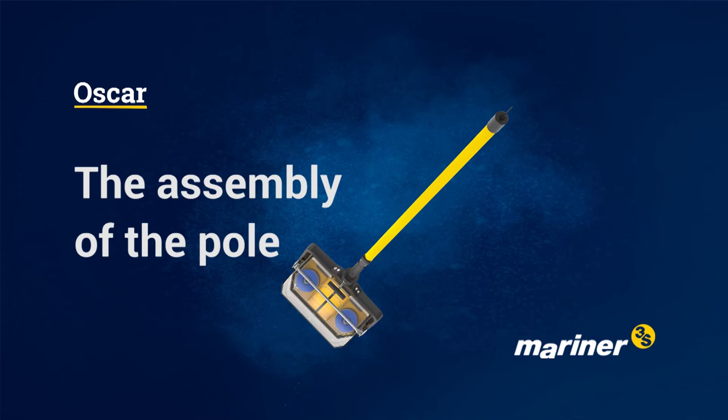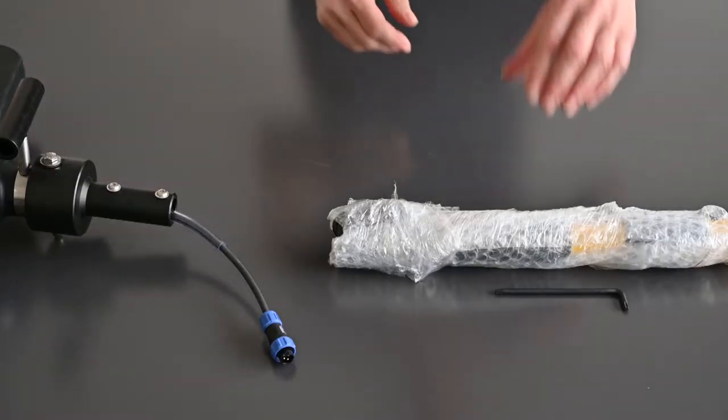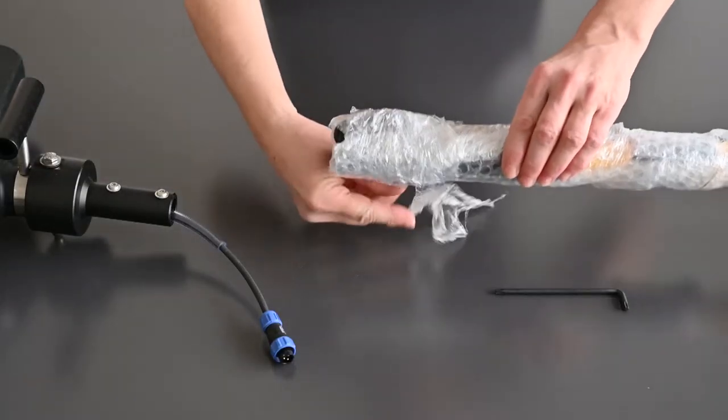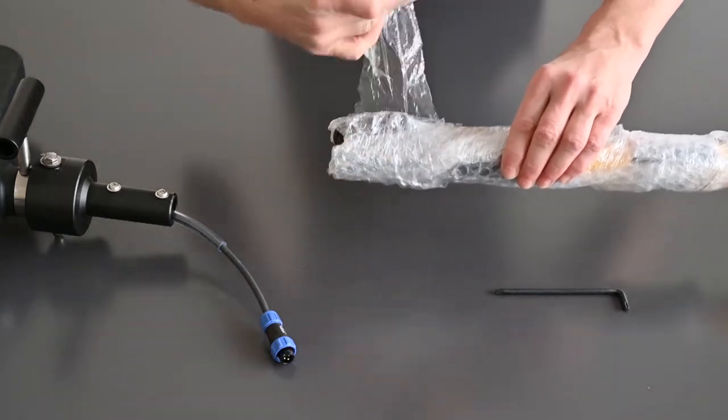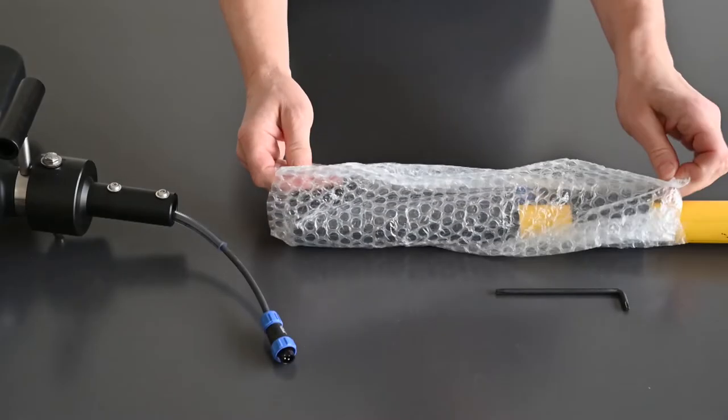Welcome to Mariner 3S. In this video we show you how to connect the telescopic pole to the Oscar. Prepare the Oscar, the telescopic pole, and the supplied torx wrench. Remove the protective film on the telescopic pole without using a knife or scissors.